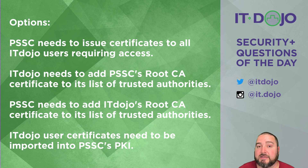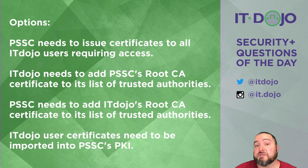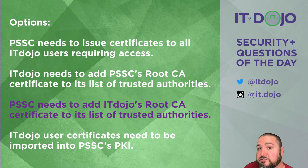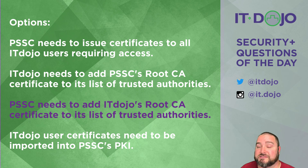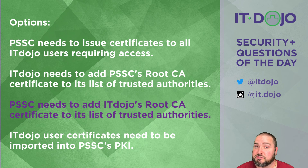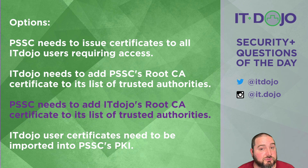Option number two says that IT Dojo needs to add the Paper Street Soap Company's certificate — its certificate authority certificate — to its list of trusted authorities. Actually, just the opposite, which is what option number three is. Number three says that the Paper Street Soap Company needs to add IT Dojo's certificate authority certificate to its list of trusted authorities. Doing so will allow the Paper Street Soap Company server to validate the CA certificate, which includes the necessary public key to validate the certificates of users in IT Dojo's network.